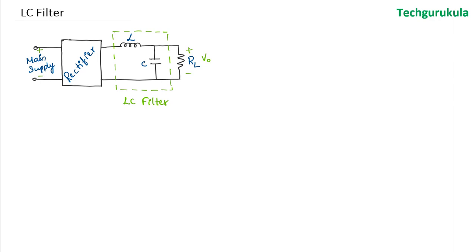In this video we are going to talk about LC filter in power supplies. The LC filter is placed right after the rectifier. It is called LC filter because we have an inductor L and a capacitor C. It is also called an L-section filter because the L and C formation looks like an inverted and flipped letter L.